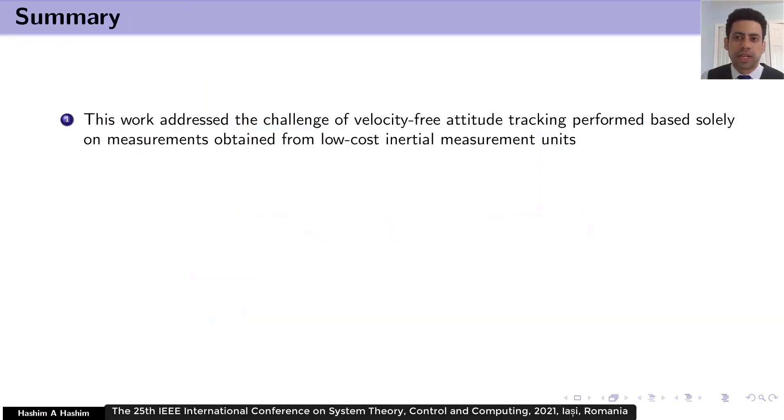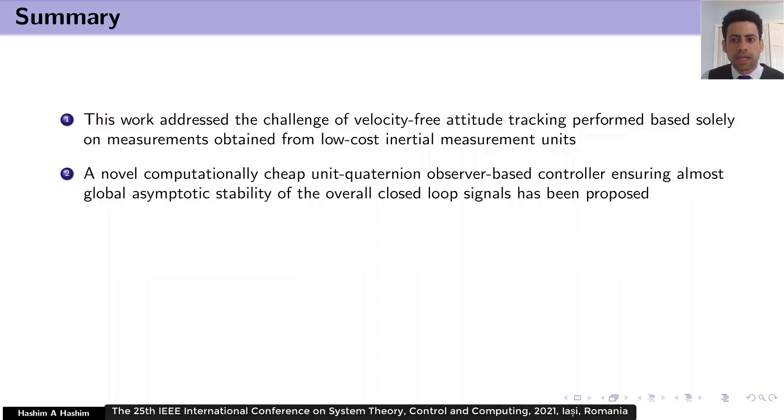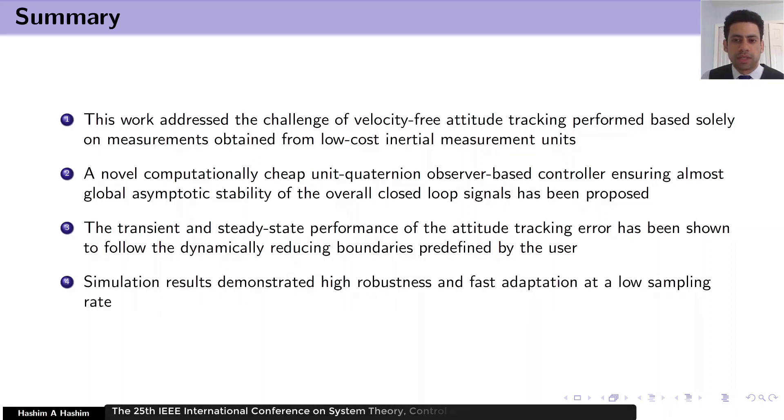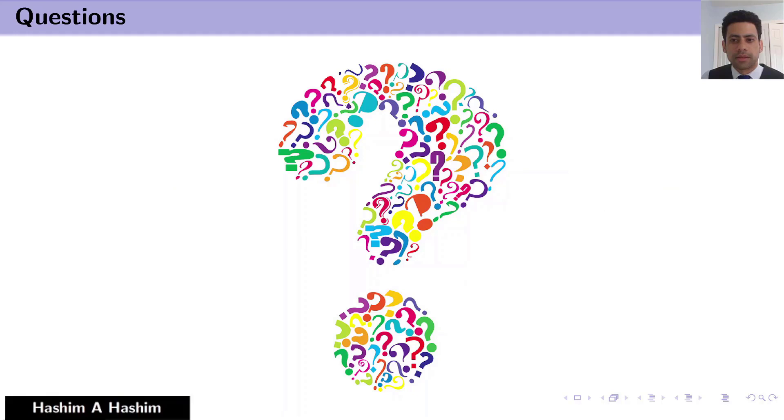In summary, this work addressed the challenge of velocity-free attitude tracking performance, based only on measurements obtained from low-cost inertial measurement units. We have proposed a novel computationally cheap unit quaternion observer-based controller, that ensures almost global asymptotic stability of the overall closed-loop signals. The transient and steady-state performance of the attitude tracking error has been shown to follow the dynamically reducing boundaries, predefined by the user. And finally, the simulation results demonstrated high robustness and fast adaptation of the proposed solution at a low sampling rate. And thank you for being part of this presentation.